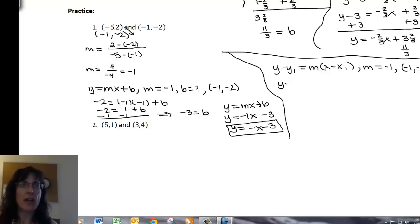And so I'll have y minus negative 2 equals m, which was negative 1, x minus negative 1. That was my x part from this ordered pair. And then simplify, so I have y plus 2 equals negative 1 times quantity, x plus 1.